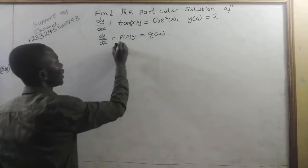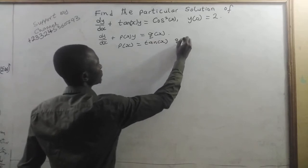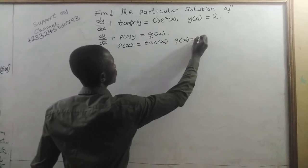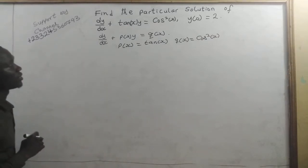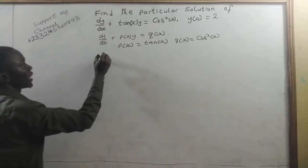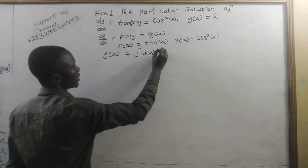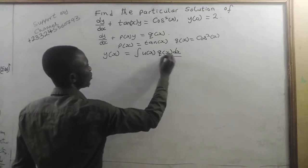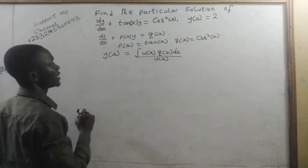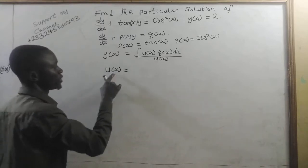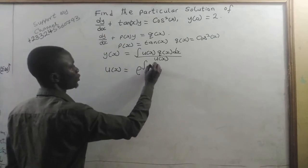So here, our p(x) is equal to tangent of x and our q(x) is equal to cosine squared of x. The general solution is given by y(x) equals the integral of u(x) times q(x) dx, all divided by u(x). So we have to find u(x), which is the integrating factor. u(x) is given by e to the power of the integral of p(x) dx.